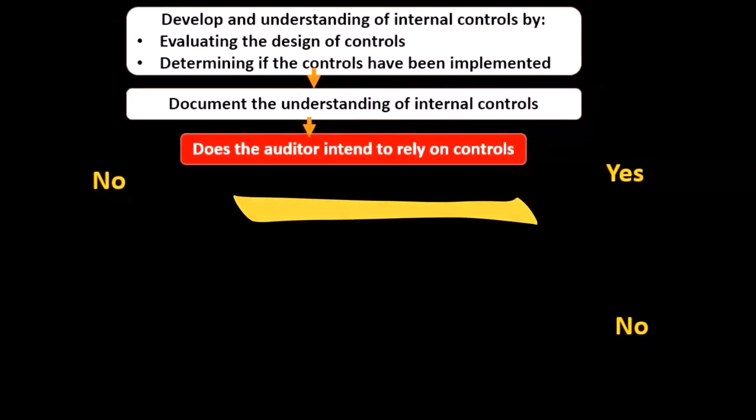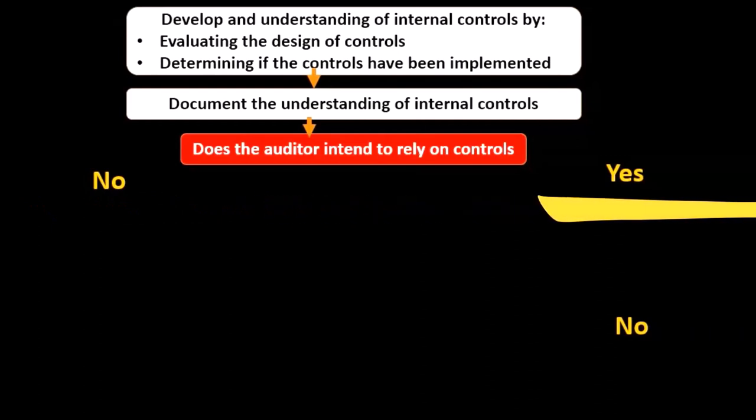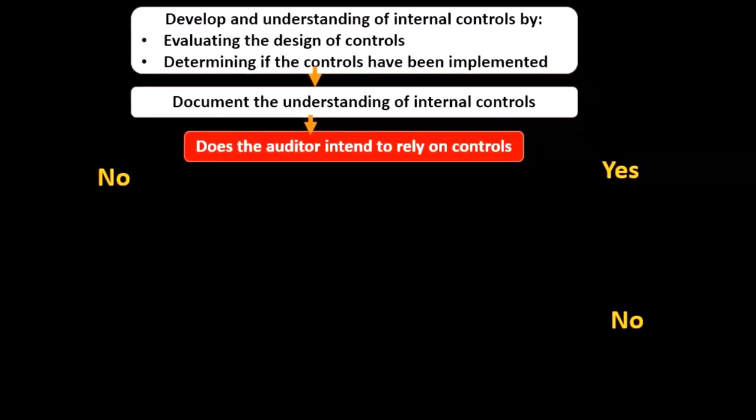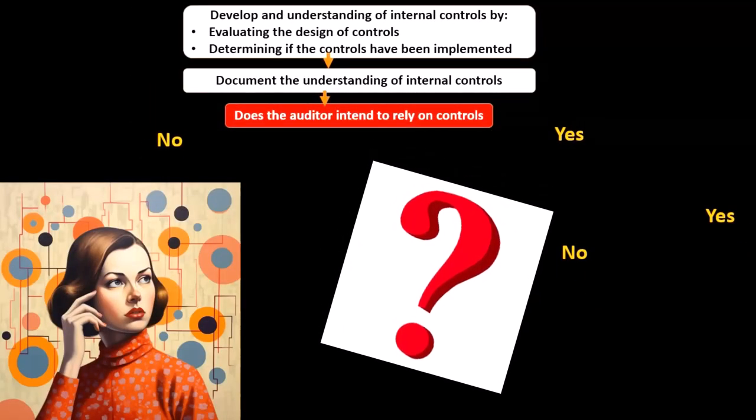Then we come to the question point. That's what this red box means—we have a question, a yes or no type of question. Does the auditor intend to rely on the controls? So at this point, we have to say, do we rely on the controls or not?